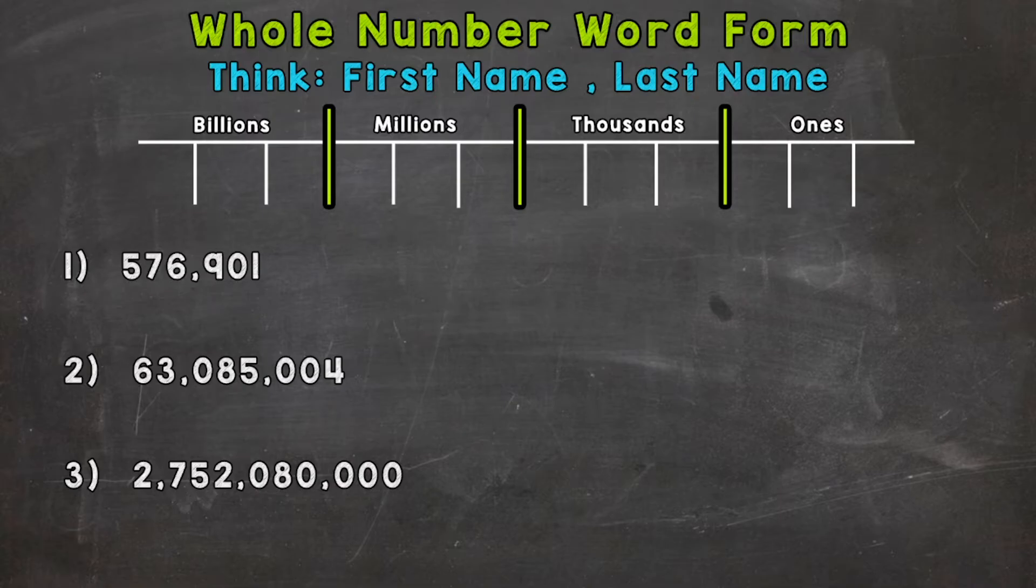I also have a place value chart that we're going to use for number one. So a place value chart will come in handy when you're first starting out with word form or if you're struggling. But your ultimate goal is to be able to do word form without a place value chart.